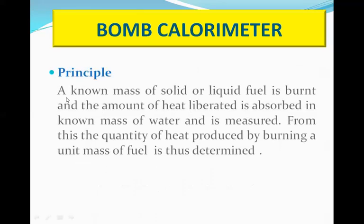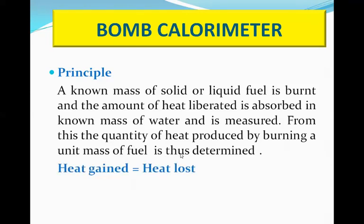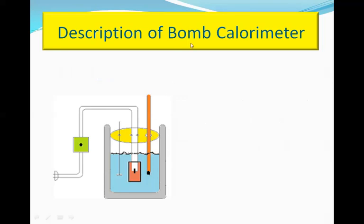In summary, a known mass of the solid or liquid fuel is burnt and the amount of heat liberated is absorbed by a known mass of water and is measured. From this, the quantity of heat produced by burning the unit mass of fuel is determined. The basic principle is: heat gained equals heat lost — the heat gained by water equals the heat lost by the burning fuel. The bomb calorimeter consists of four main parts as shown in the diagram.